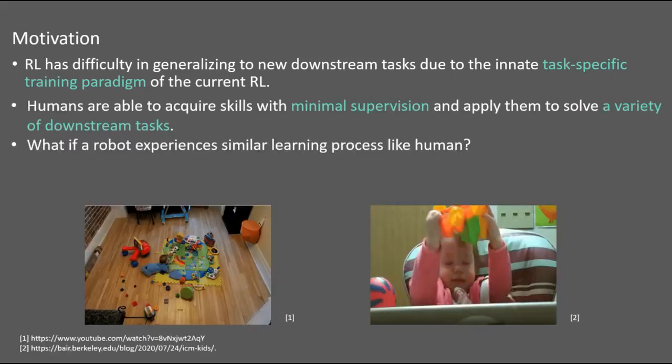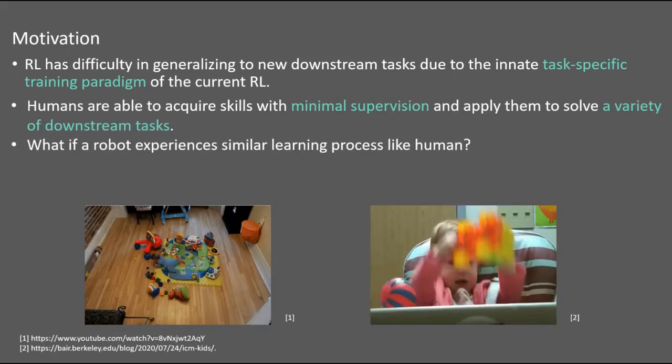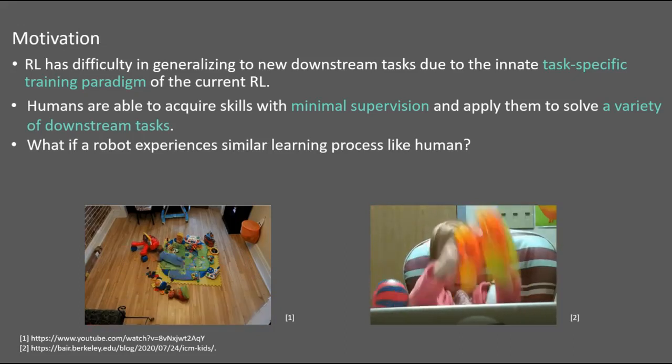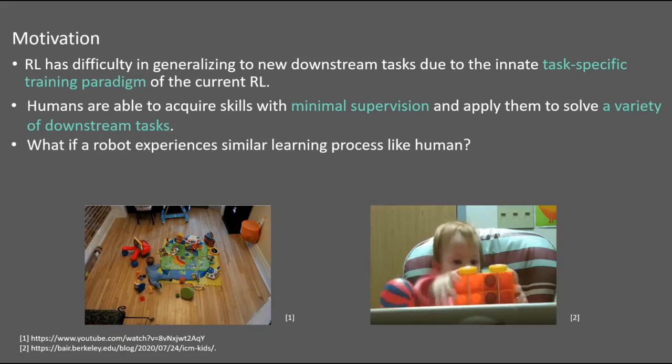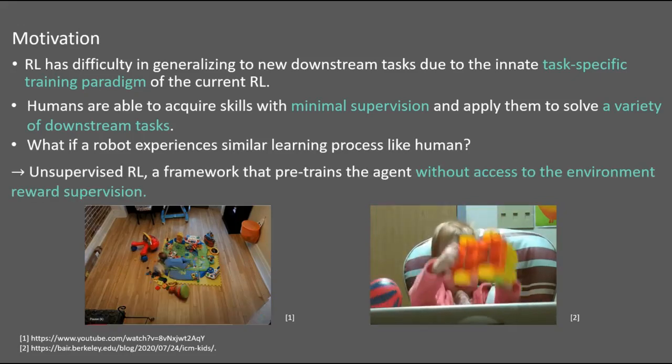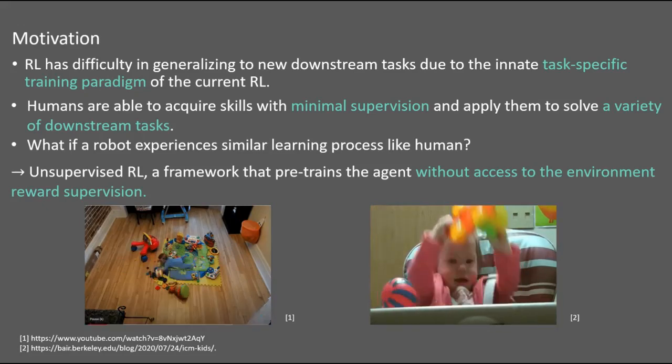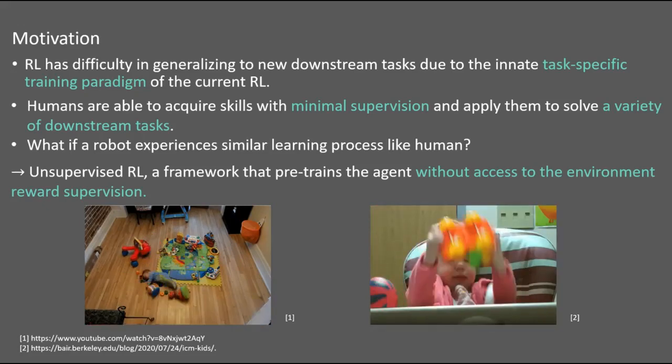However, humans are able to acquire skills with minimal supervision and apply them to solve various downstream tasks. So what if a robot experiences similar learning process like humans? We started this research from this motivation and proposed to utilize the unsupervised RL that pretrains the agent without access to environment reward supervision.